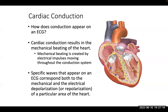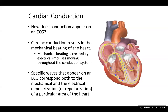Once electricity has been generated in the sinoatrial node, before other cells downward generate any electricity, the SA node fires. Whenever a certain focus of the heart generates electricity, all the other ones are suppressed because of refractoriness. When the SA node fires, electricity spreads very fast through the right atrium and then immediately the left atrium. There are bundles connecting them but their names aren't important for now.